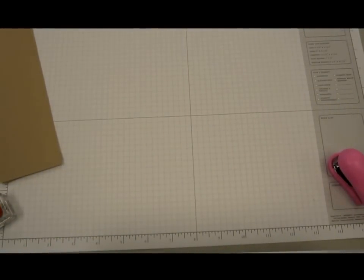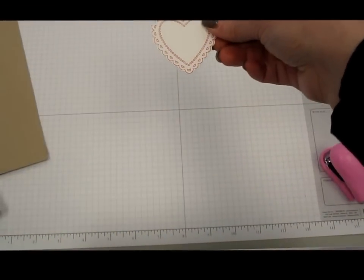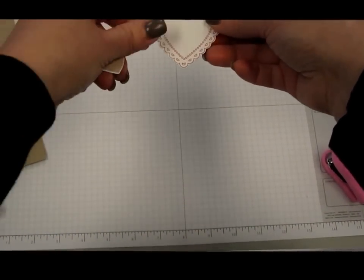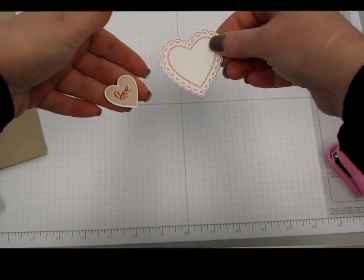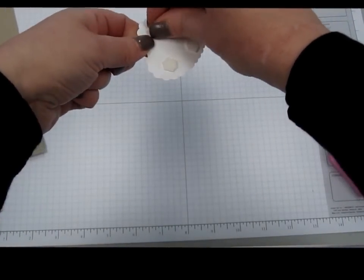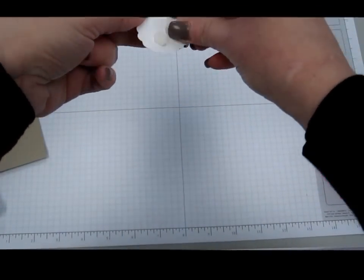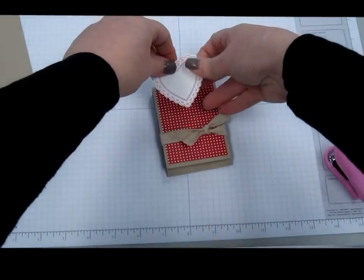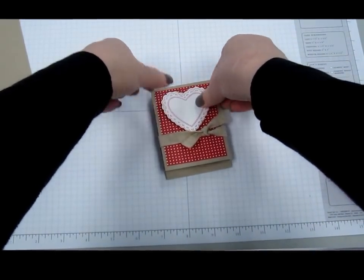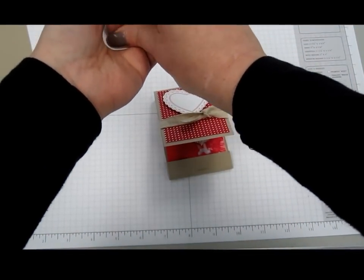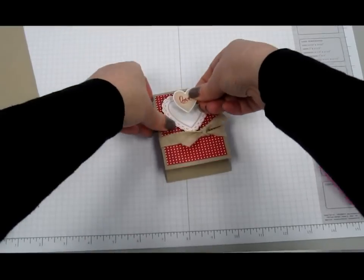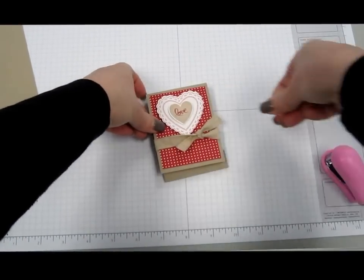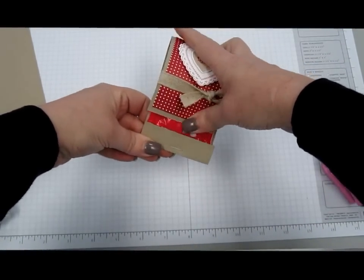And then what you'll end up with is you'll have your larger heart and your smaller heart. And I went ahead and put dimensionals on the back of those. I'm just going to peel those off. And I'll grab my treat holder there, peel this other one off and voila. It's all completed.